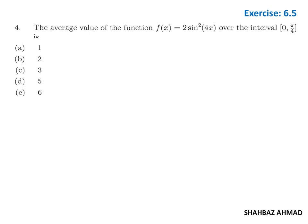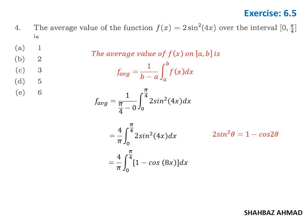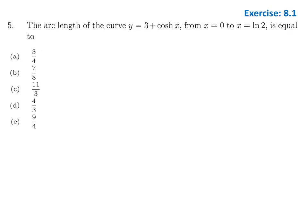Question 4 asks for the average value of a function from exercise 6.5. The formula for average value on [a, b] is (1/(b−a))∫f dx. After simplification we use the identity 2·sin²θ = 1 − cos(2θ). Integrating gives θ − sin(8θ)/8, evaluated from 0 to π/4, which yields 1. Option A is the answer.